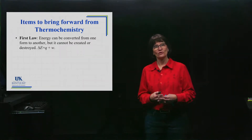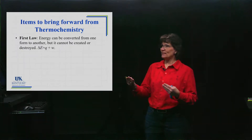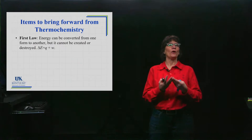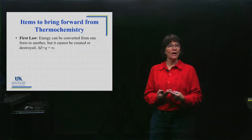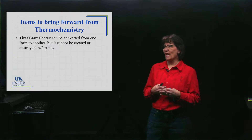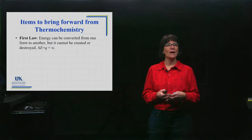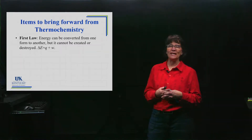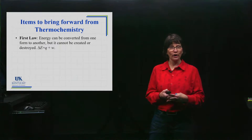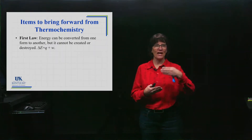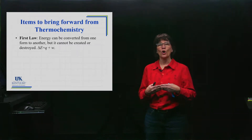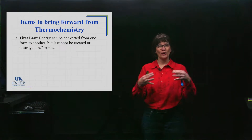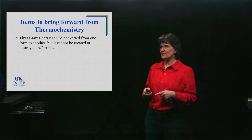First of all, there is the first law of thermodynamics. Energy can be converted from one form to another, but it cannot be created or destroyed. The equation we utilized was delta E for the change in internal energy — sometimes the letter U is used instead — but delta E equals Q (heat) plus W (work), which says that when a system undergoes a change in energy, it can only do so by giving off or taking in heat, or doing work or having work done on it. That's how you get energy in and out of a system.